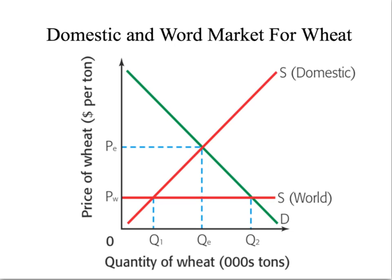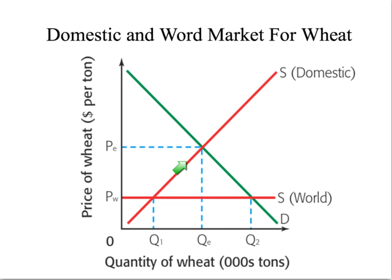The first thing to look at is what's the situation before the U.S. market is opened up to world producers of wheat. There is a U.S. domestic demand for wheat and a U.S. supply of wheat.